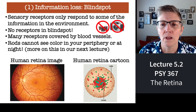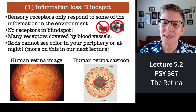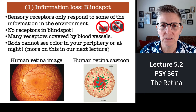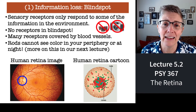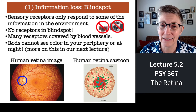It gets worse than that. Some people wonder what it feels like to be blind. Well, it turns out we're all blind — every single person is blind. Because in each of our eyeballs, we have a hole and we're blind to any light that falls in that hole. That's called the blind spot, because it's a spot in each eye where you're blind.